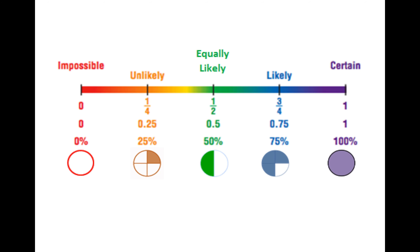This is just a reminder of our probability line. On the left is zero — impossible. Moving right: unlikely at 25 percent, the middle is 50 percent, then 75 percent is likely, and one or 100 percent is certain. This is the line we copied in our notebook — just remembering what it looks like.